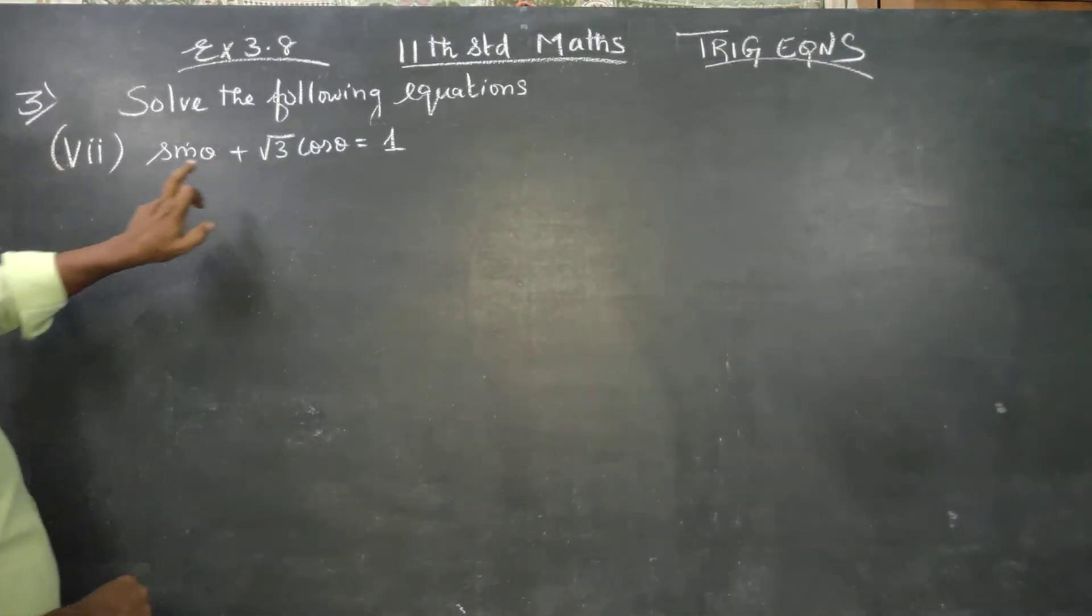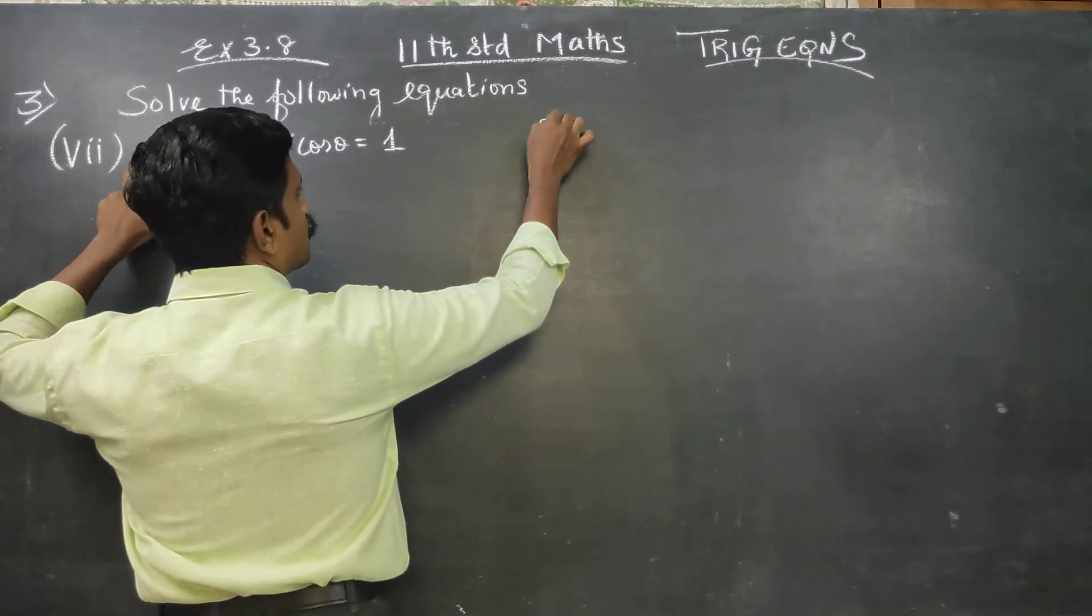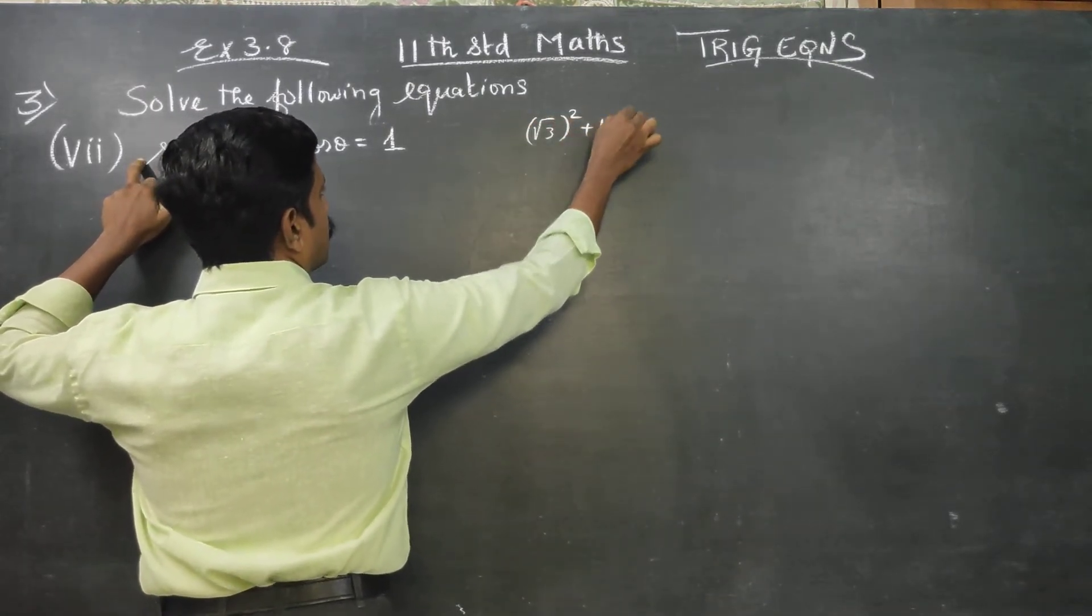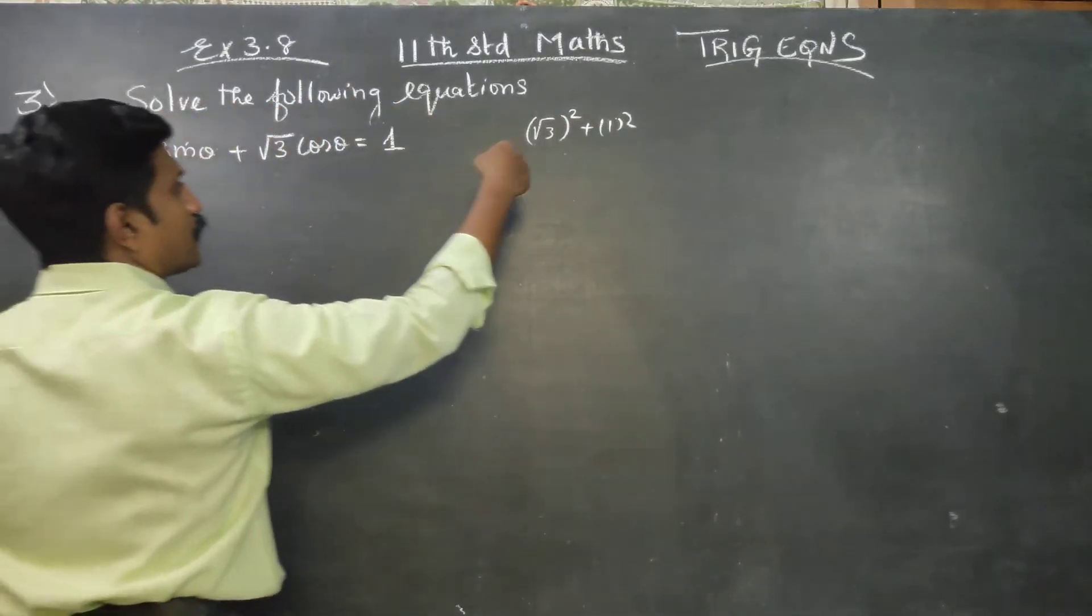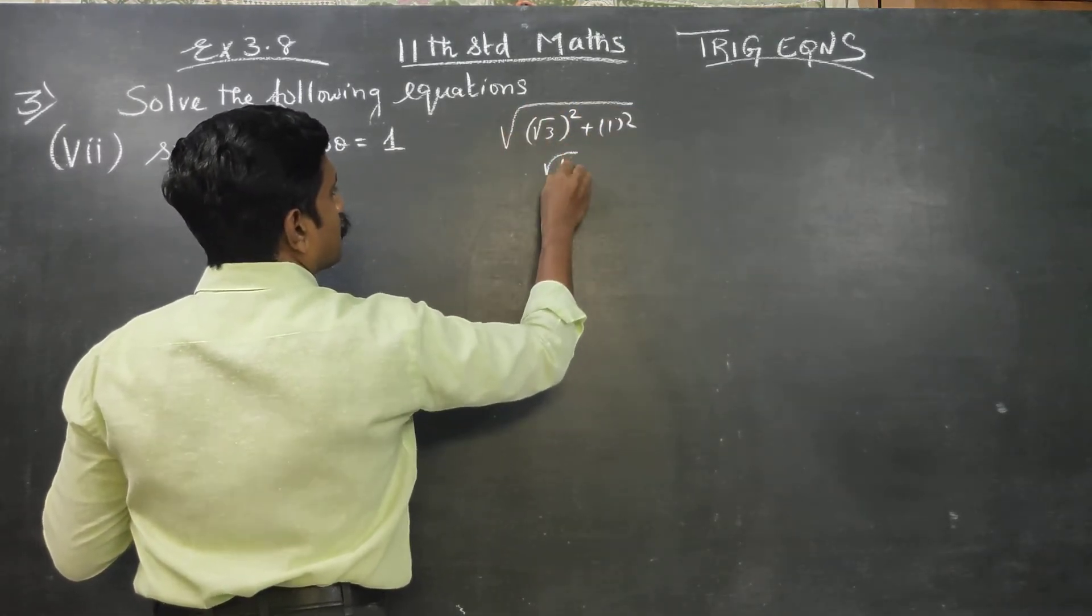Here is coefficient root 3, here is coefficient 1. Root 3 squared is 3, this coefficient squared is 1. That is root of 3 plus 1, which is root 4, equals 2.